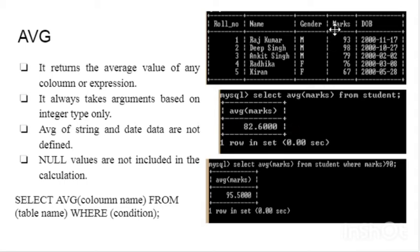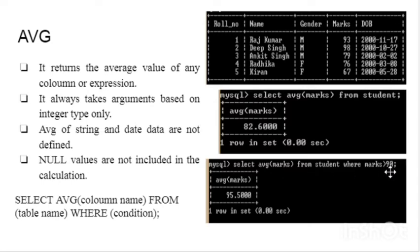It will add up all the values and divide by the count to produce the average. When we give a WHERE condition, for example WHERE marks > 90, it will consider only the values greater than 90 and compute their average. The average is obtained as a single value because it is an aggregate function — it will produce only a single result as output.